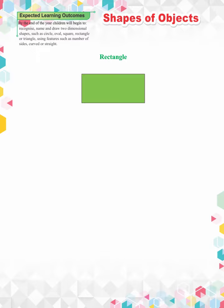This is a rectangle. It is a two-dimensional shape. It has two long and two short sides. It has four corners. It looks like an Android cell phone.